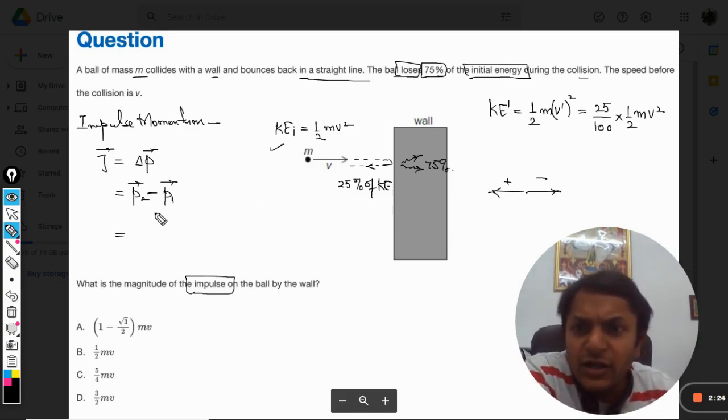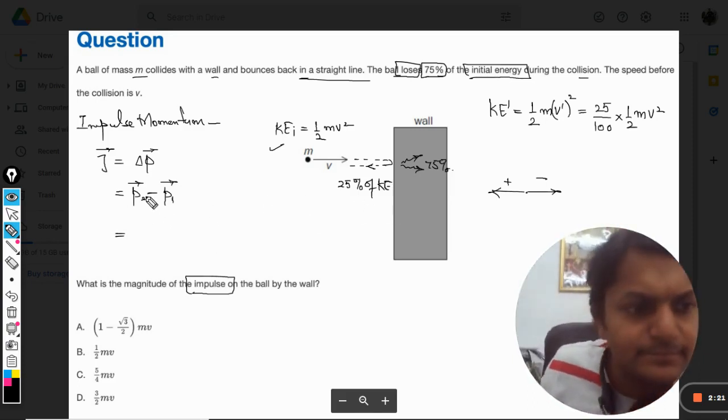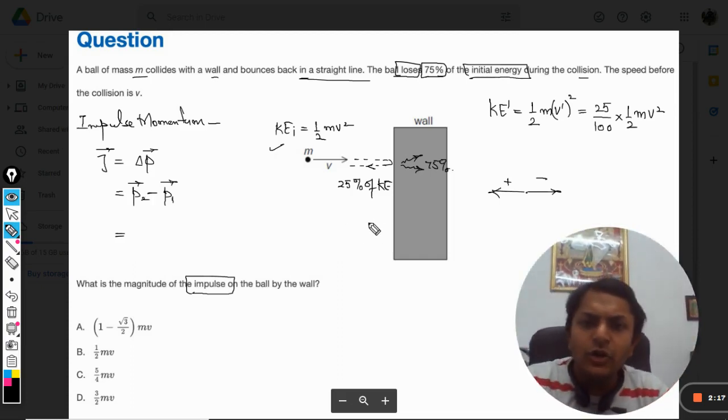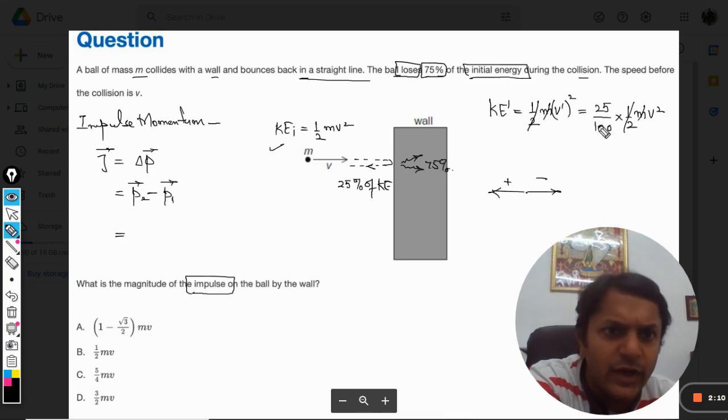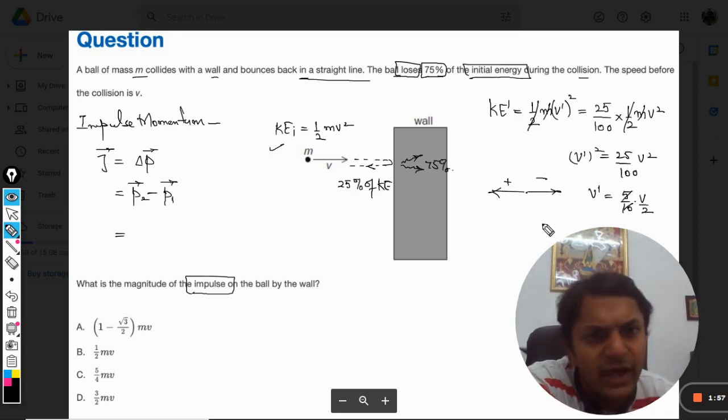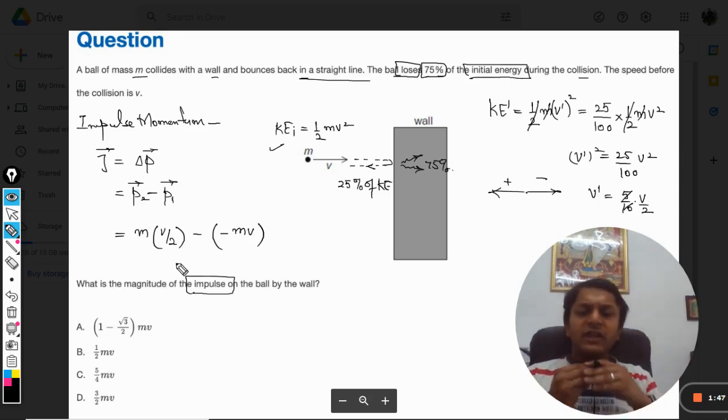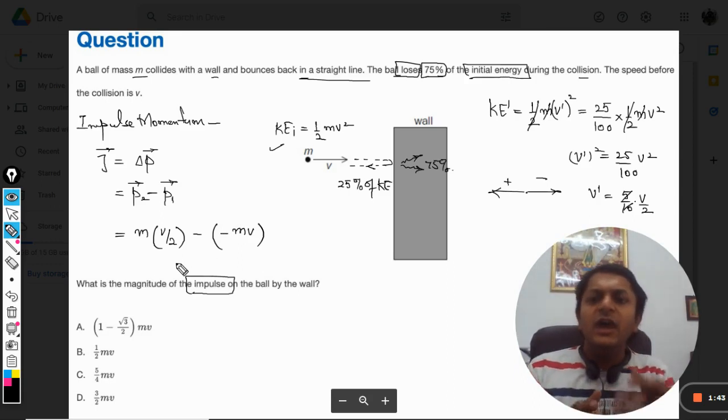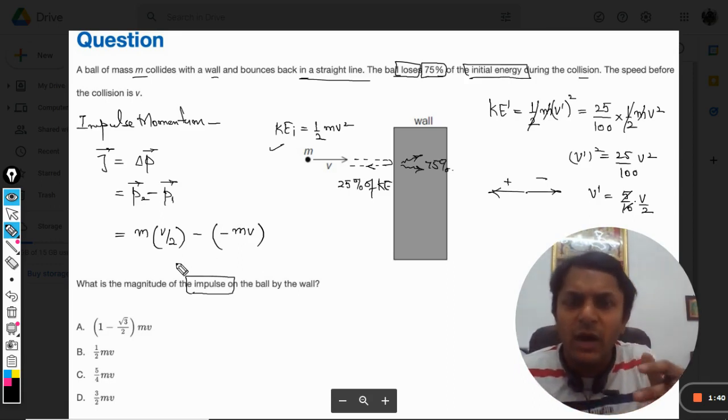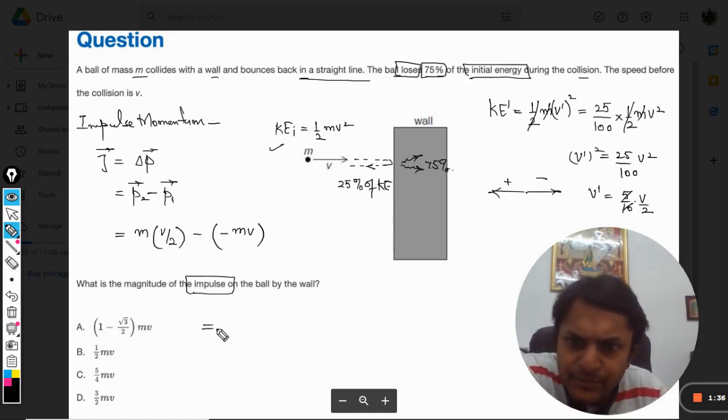So our final momentum will be found from this place now. Half into m and v dash square will be 25 divided by 100 v square, so v dash is equal to 5 by 10 into v, so it becomes v by 2. So our final momentum will be m into v by 2 minus of minus of m v, because our initial momentum will be taken as negative. So that will be minus m v and the final momentum will be positive m v by 2. So this is our change in momentum.